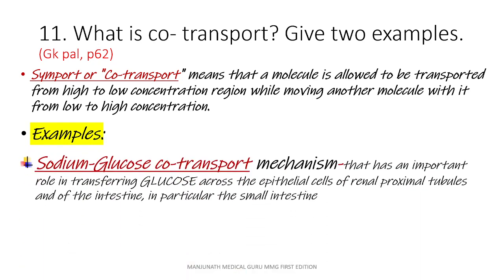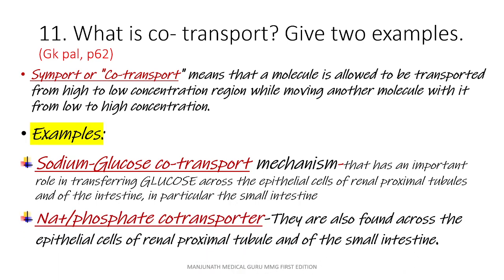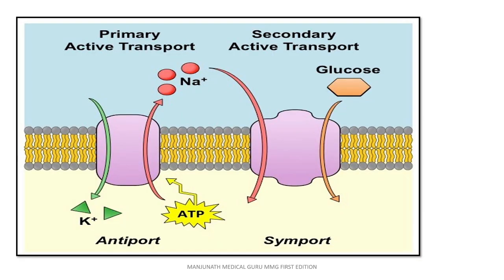Examples: Sodium-glucose co-transport mechanism, which has an important role in transferring glucose across the epithelial cells of renal proximal tubules and of the intestine, in particular the small intestine. Sodium-phosphate co-transporter, also found across the epithelial cells of renal proximal tubule and of the small intestine. In the figure, potassium and sodium move in opposite directions — this is called antiport. Sodium and glucose move in the same direction — this is called symport.